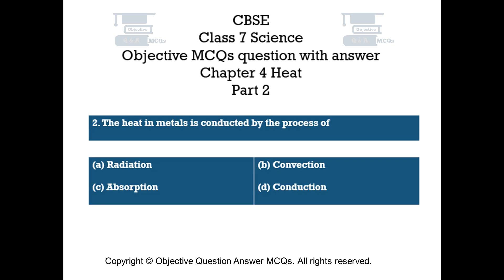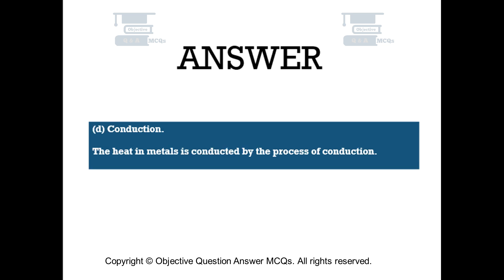Question number 2. The heat in metals is conducted by the process of — Option A: radiation, Option B: convection, Option C: absorption, Option D: conduction. The right answer is Option D — Conduction. The heat in metals is conducted by the process of conduction.